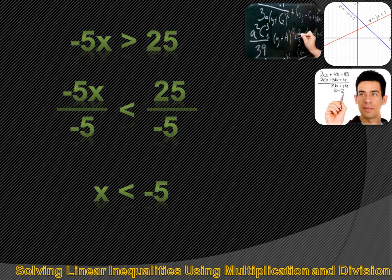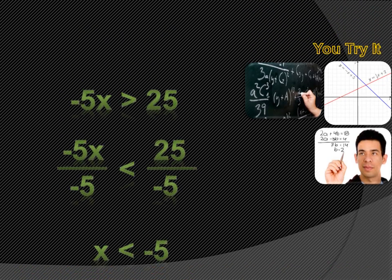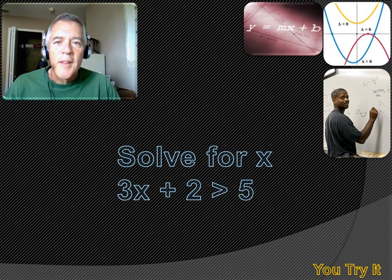If you get confused, you can always test that by putting a number less than negative 5 into the original expression. Using negative 6, it would be negative 5 times negative 6, or positive 30, which is in fact greater than 25. Now you try this one — hit the pause button, do the problem, and then hit the forward key to move on to the answer.